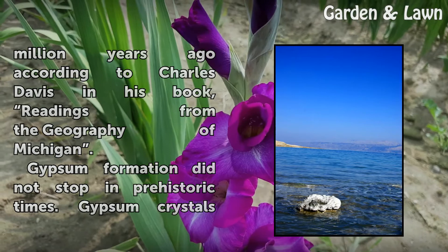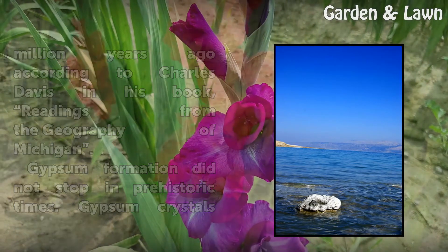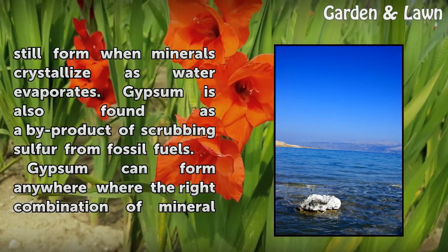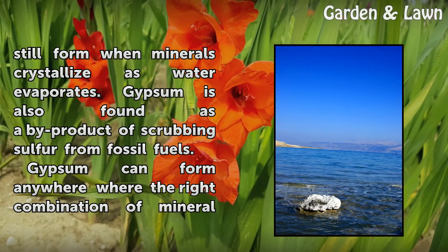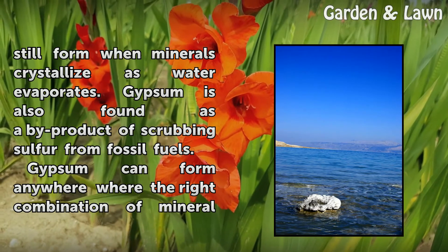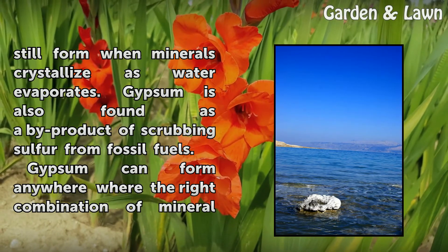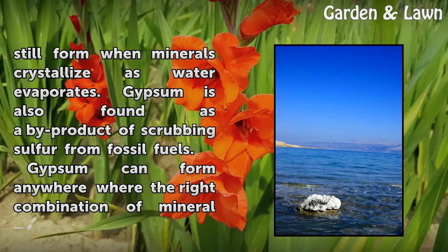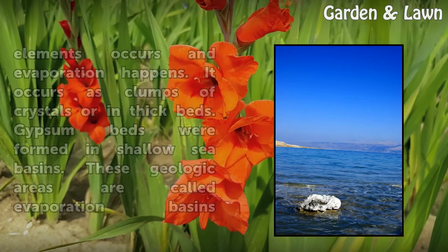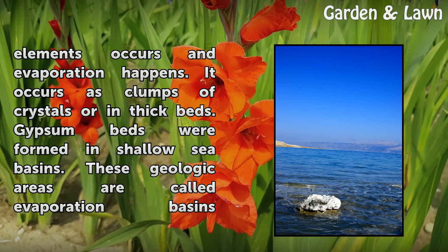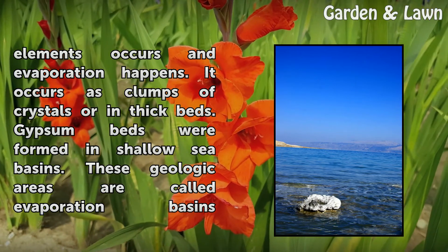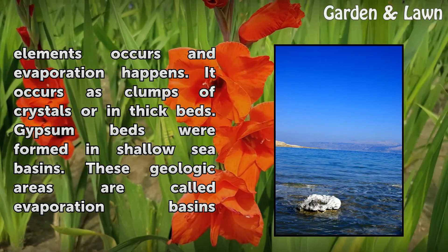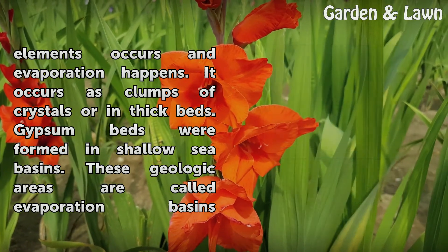Gypsum formation did not stop in prehistoric times. Gypsum crystals still form when minerals crystallize as water evaporates. Gypsum is also found as a by-product of scrubbing sulfur from fossil fuels. It can form anywhere where the right combination of mineral elements occurs and evaporation happens, occurring as clumps of crystals or in thick beds.